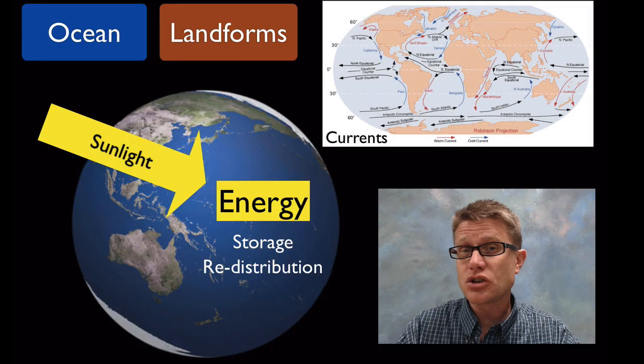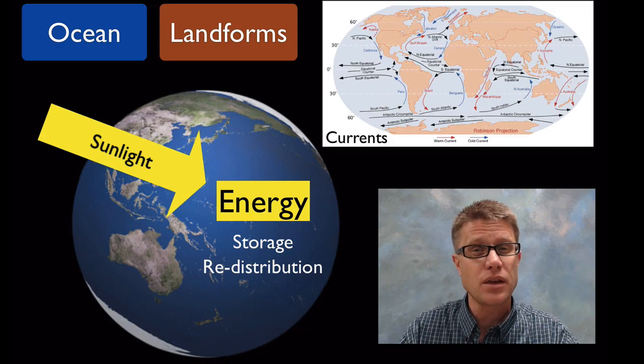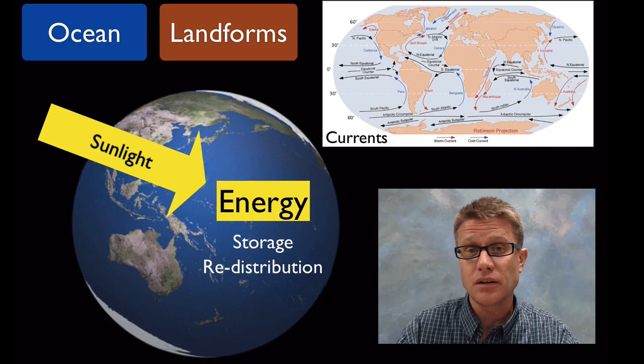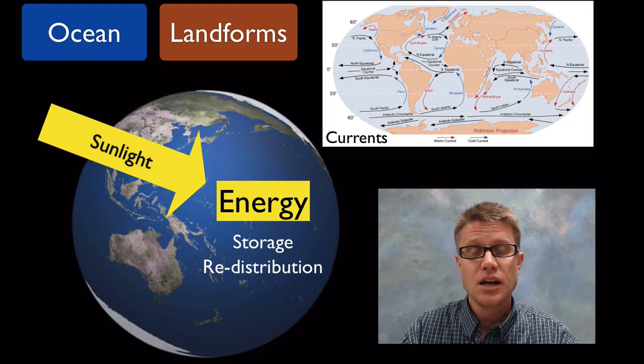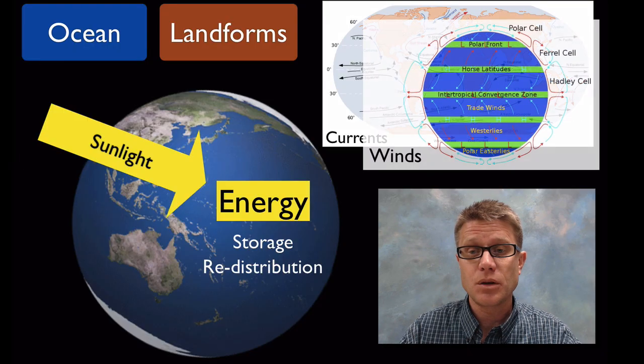Some of the major redistributions on our planet are the currents. Current is flow within the ocean water itself, caused by temperature and changes in salinity. In the atmosphere, what moves our weather around are the winds.